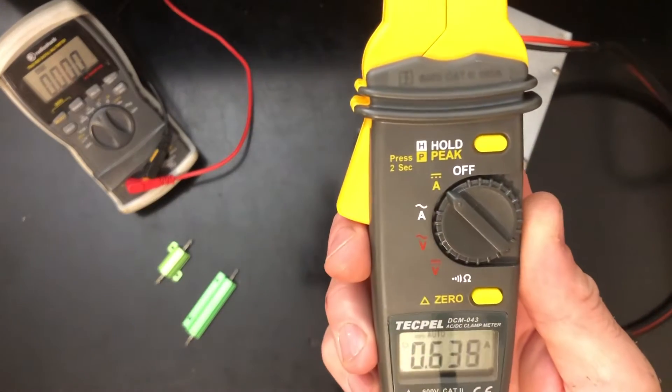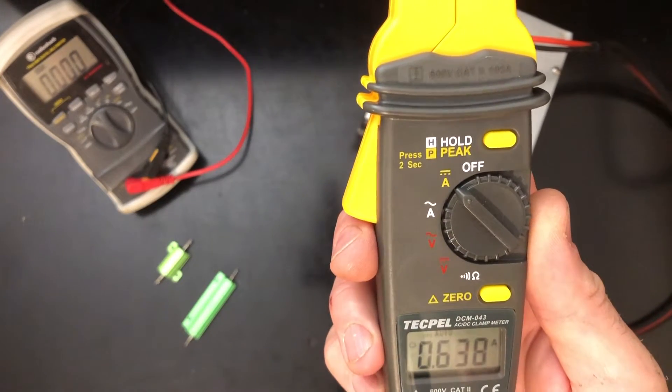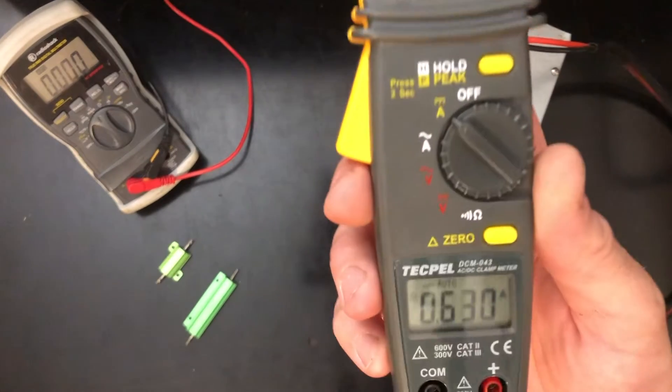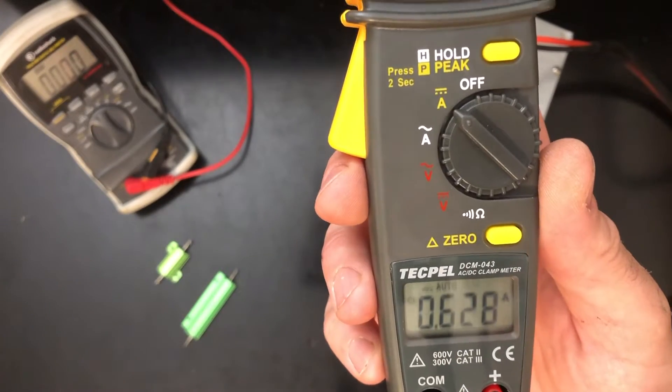Here's a quick video about this, the Tekpel DCM043, and as you can see with nothing going through it, it's reading 0.630 DC amps.